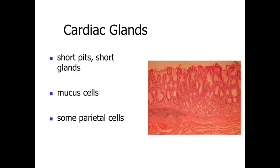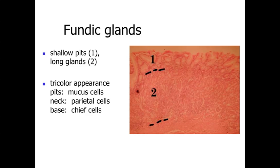Within the fundus of the stomach we have the fundic glands, which have relatively shallow pits with mucus-secreting cells and relatively long glands extending deeper. These glands give a tricolored appearance to the mucosa: a pale staining at the top from mucus-secreting pit cells; a reddish or pinkish region in the neck of the gland where parietal cells predominate; and a more basophilic staining at the base of the gland where the chief cells are located.